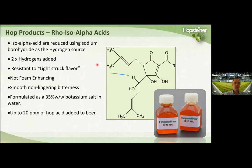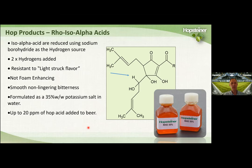Rho is produced by treating iso-alpha acids with sodium borohydride, adding two hydrogen atoms. This makes rho resistant to light struck flavor. Rho is not foam enhancing, but it has a nice smooth non-lingering bitterness. The product is formulated as a 35% solution as a potassium salt in water. It's typically added post-fermentation and can be used in concentrations up to 20 ppm or more. It's primarily used to smooth out the bitterness of your beer and can even be used in a non-light-stable beer — if you feel your beer has a harsh bitterness, reduce some kettle hopping and use rho to smooth it out.